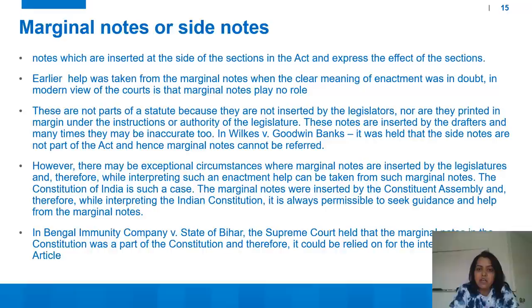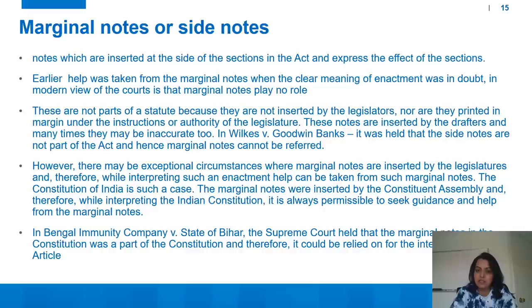However, there may be exceptional circumstances where marginal notes are inserted by the legislature. The Constitution of India is such a case — the marginal notes were inserted by the Constituent Assembly, and therefore while interpreting the Indian Constitution, it is always permissible to seek guidelines from the marginal notes. In Bengal Immunity Company v. State of Bihar, the Supreme Court held that the marginal notes of the Constitution were a part of the Constitution and therefore could be relied on. In short, marginal notes of an act are usually not considered, but if they are inserted by the legislature itself, they can be considered.